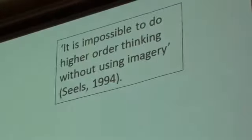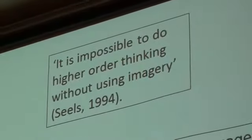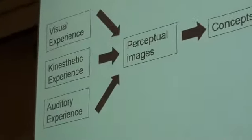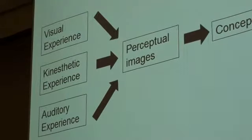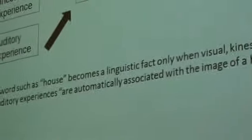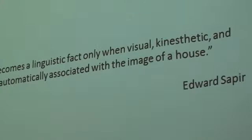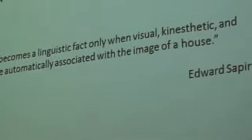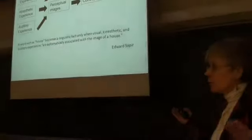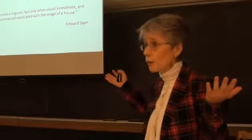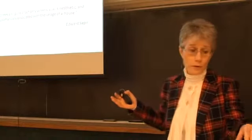Why? Because when we start out with various kinds of experience, which then formulate perceptual images, this provides the input for concept development and then language. Sapir, a great linguist from the 1920s, said a word such as 'house' becomes a linguistic fact only when visual, kinesthetic, and auditory experiences are automatically associated with the image of a house. In fact, a word is really one of the most abstract ways you can represent experience because written letters are completely arbitrary — they're not motivated signs, they're arbitrary signs.